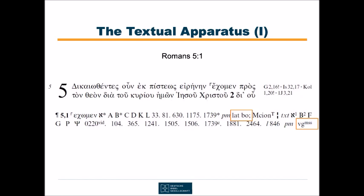In the second line, you read that vg, which stands for Vulgate, reads an indicative form. The addition of mss in superscript means that just individual Vulgate manuscripts, but not the majority, has the respective reading. So this is no contradiction to the mentioning of latt, which includes the Vulgate in general, with the other reading. Finally, the evidence by church fathers is given. In this instance, there is only one mentioned: Marcion. This is a good example that the word 'church fathers' is used in a pretty wide sense in the edition.